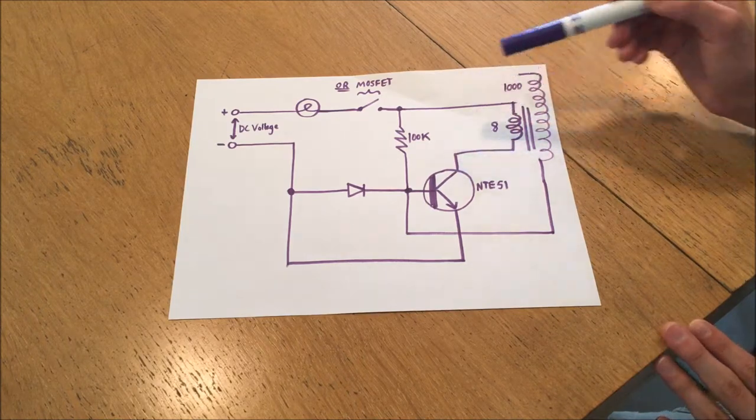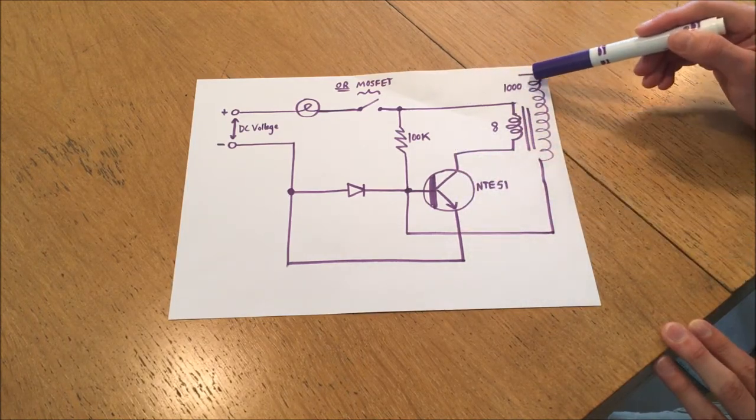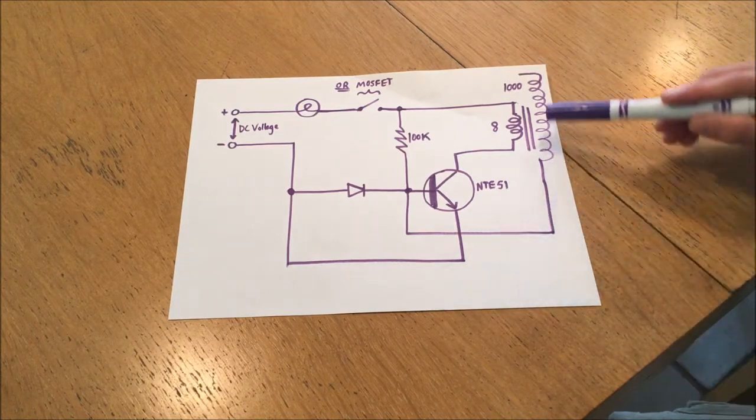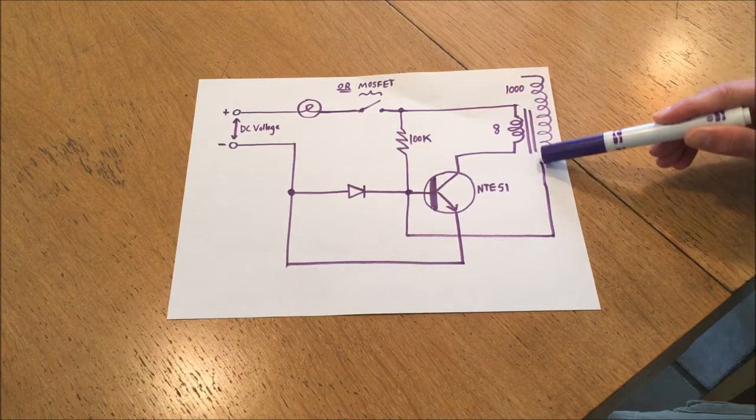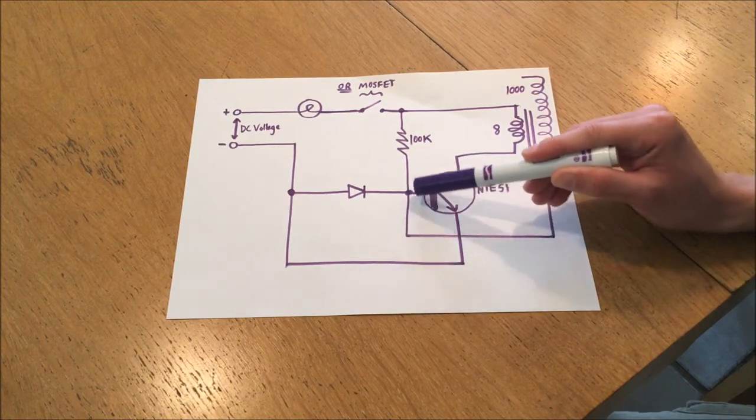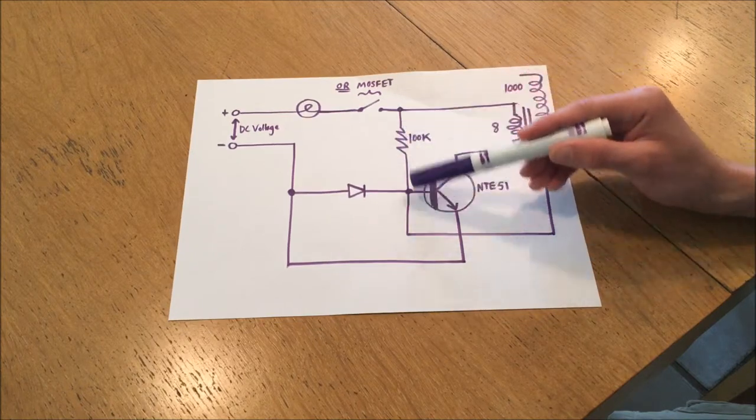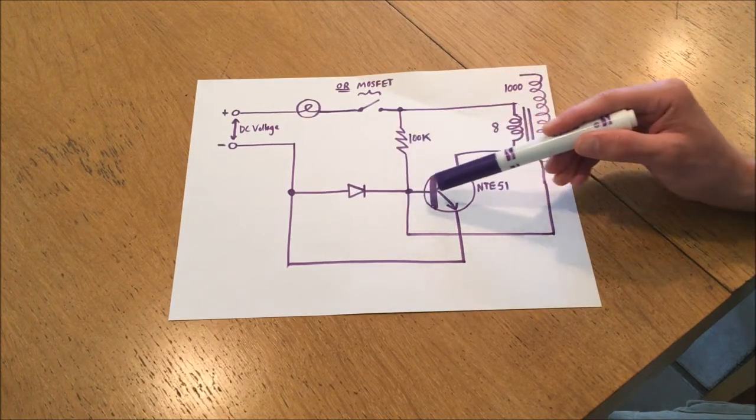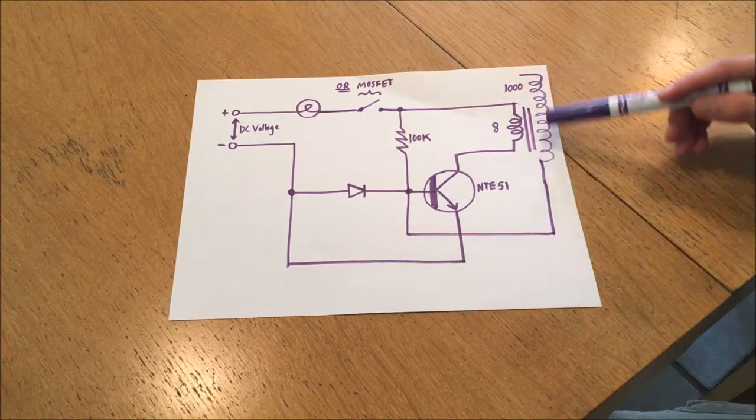What essentially happens is, when all this current starts flowing through the transistor, current will flow through this in the capacitive link, and will actually, if this is wired in the correct orientation, serve to counteract the flow of current through the 100k resistor. Counteracting this flow of current will actually switch the transistor off.